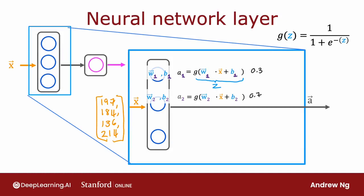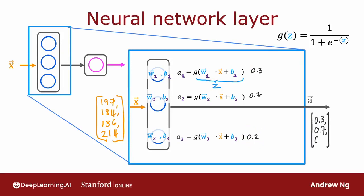Similarly, the third neuron has parameters w3 and b3, and computes an activation value a3 equals g of w3 dot product x plus b3, which may be say 0.2. So in this example, these three neurons output 0.3, 0.7, and 0.2, and this vector of three numbers becomes the vector of activation values a.